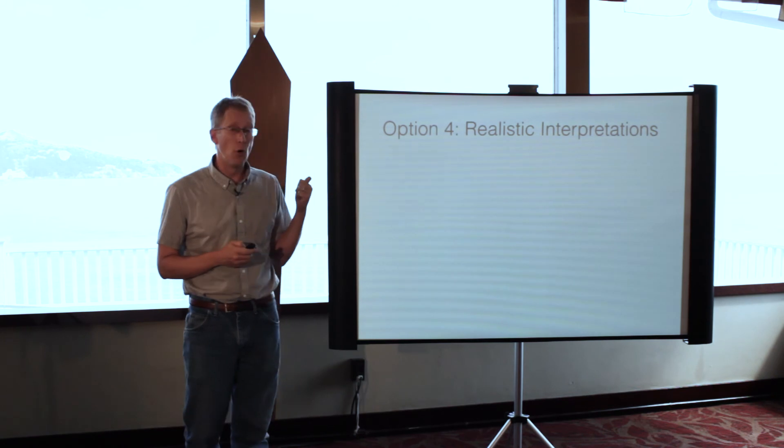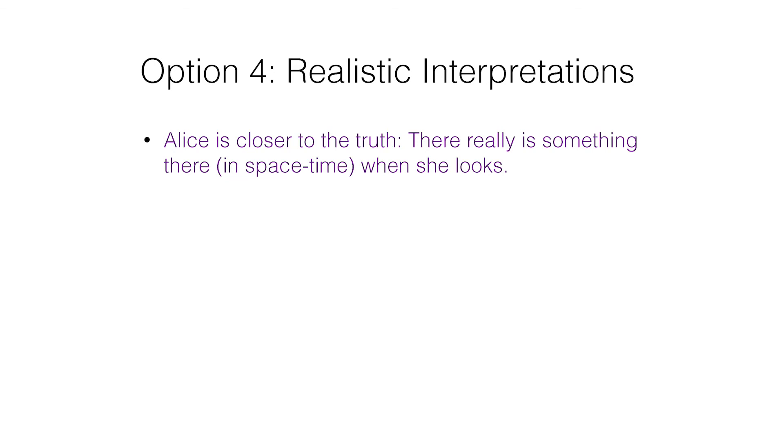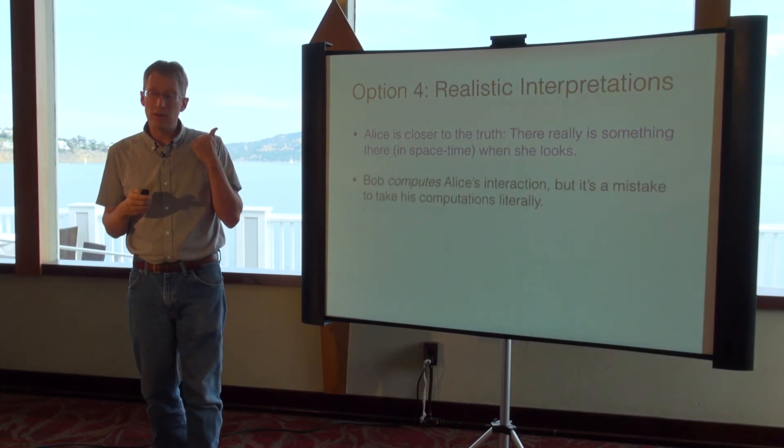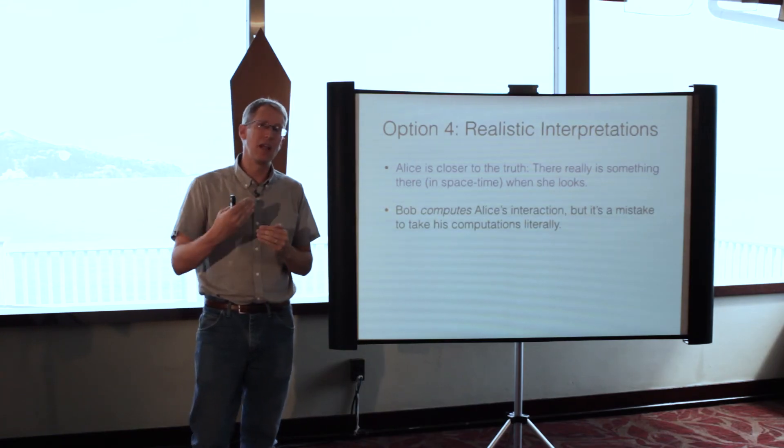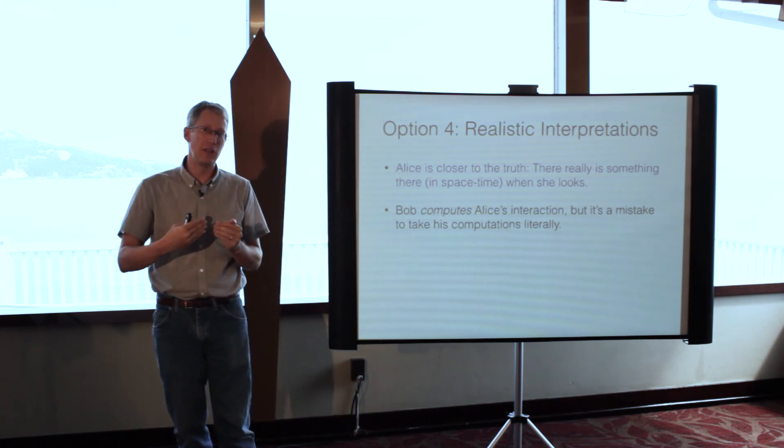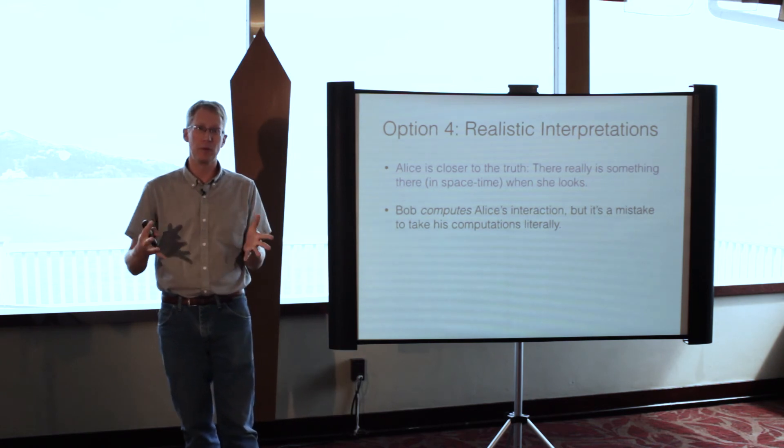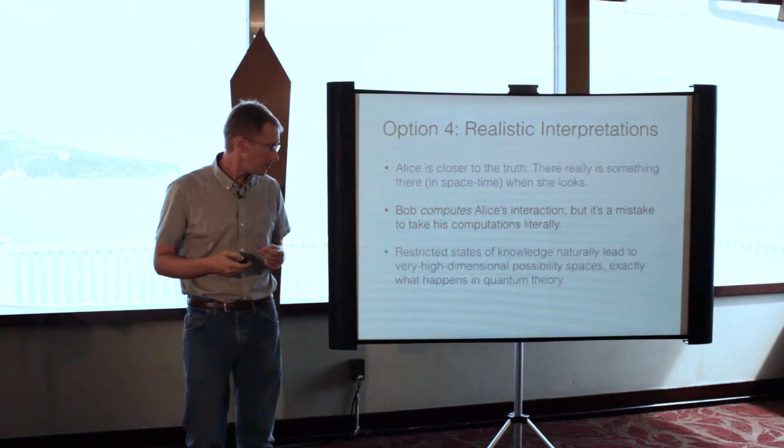Option four is that basically Alice is more right. She just saw something and she's right about it. At least Alice is closer to the truth than Bob and there really is something there in space-time when she looks. How should we interpret Bob? Remember, Bob is on the outside in this perspective. He's computing what is happening to Alice and we have rules of quantum mechanics telling him how to compute that. But just because he's using these computational tools does not mean that these mathematical tools he's using are state of reality. Maybe Bob on the outside is confusing his computations for reality.